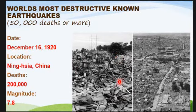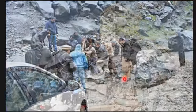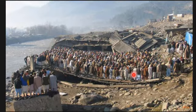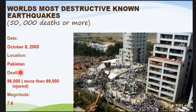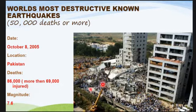Another destructive earthquake occurred in Pakistan in 2005. Buildings collapsed, trapping many people. About 86,000 died and more than 69,000 were injured. The quality of the structures and materials used greatly affected the extent of damage.